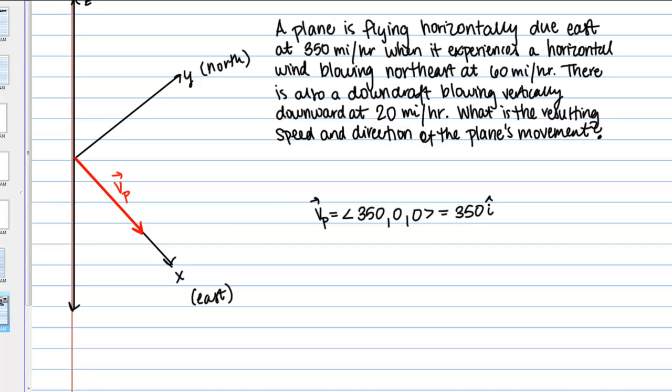What's next? The plane is flying horizontally due east when it experiences a horizontal wind blowing northeast at 60 miles per hour. Horizontal once again tells us that we're still in this XY plane. Northeast tells us direction of the vector. Without further specification, we'll just assume that northeast means at a 45 degree angle, exactly between north and east. Let me sketch that into our picture.